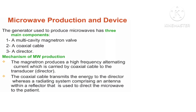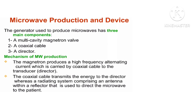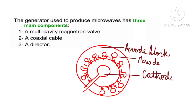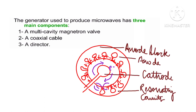Microwave diathermy also works on the principle of thermionic emission. Now let's look at the production of microwave radiation. To produce it, there are three basic components: first, a multi-cavity magnetron; second, a coaxial cable; and third, a transducer. In the magnetron, the cathode is present in the center, surrounded by the anode with anode blocks forming resonating cavities.